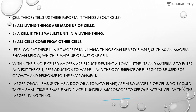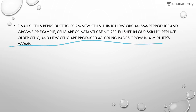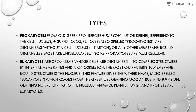Larger organisms such as a dog or a tomato plant are also made up of cells. You can take a small tissue sample and place it under a microscope — for example, you can scrape the purple lining of an onion and observe millions of cells. Cells reproduce to form new cells; this is how organisms grow. New cells are produced as young babies grow in a mother's womb, with cells continuously dividing, specializing, and differentiating.